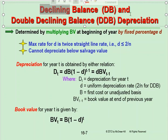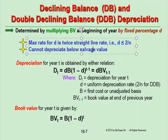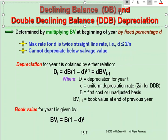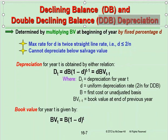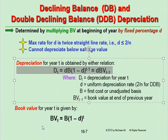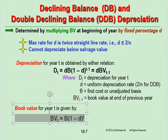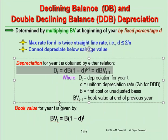Declining balance and double declining balance — when we go over declining balance (DB) or double declining balance (DDB) depreciation, we have some formulas we have to use. These formulas apply for either DB or DDB depreciation, and as a matter of fact, the second formula is derived from the first one.